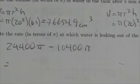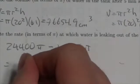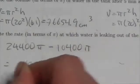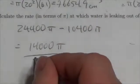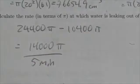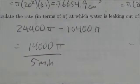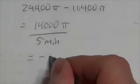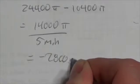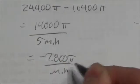Minus 10,400π, and that happened in five minutes. So if we just divide that by 5, this is going to be 2,800π per minute.